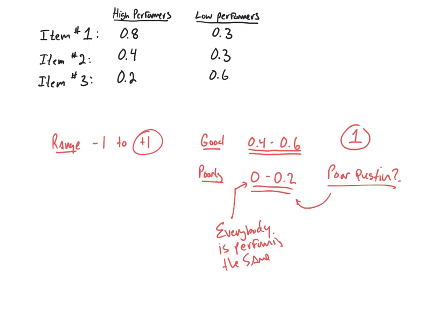Now, occasionally, you may even get a negative score. A score from negative 1 to up to negative 0.1. Down in here, what does that mean? That is what we call negative discrimination.